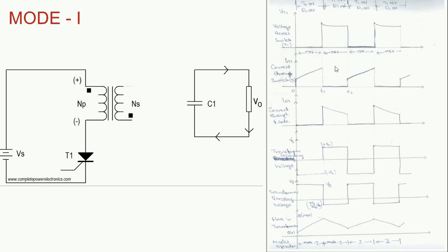This is in mode two. During mode one, the switch T1 is in on condition, so no voltage drop across the switch. The current flows through the switch via the transformer and it will keep on growing. The current through the switch will keep on increasing.